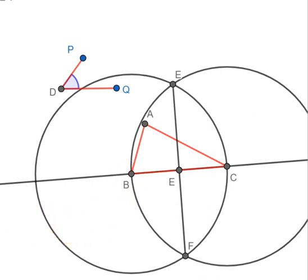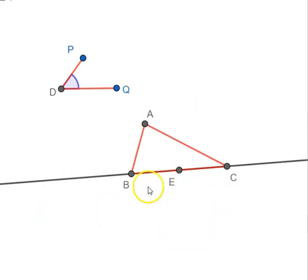All these constructions we are doing are based on what we have already done and proved, so we don't have to revisit how this is a midpoint. Now that I have found the midpoint, let me remove all these circles. Now I will copy this angle at C.